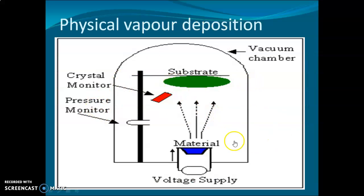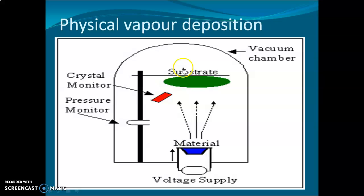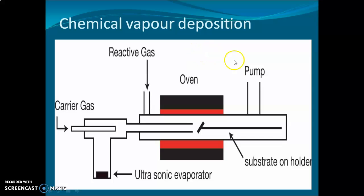Physical vapor deposition (PVD) is another method to obtain metals as nano plates. A material is taken and, through an evaporation technique, thin films are deposited onto a substrate, producing nanomaterials. Chemical vapor deposition (CVD) works similarly, but uses reactive gases to separate and deposit nano thin films.